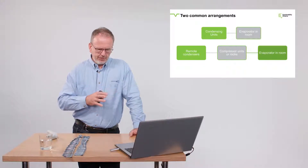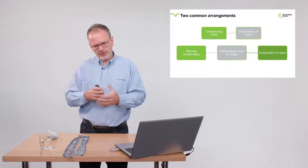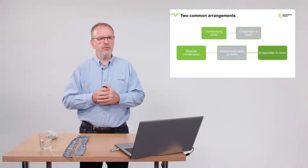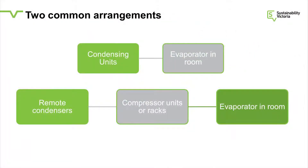Now, the compressors are one component — there are four components in the refrigeration system, but these are arranged into what we call units. One arrangement is where you have a condensing unit and an evaporator. The refrigeration technician buys one of each, puts the condensing unit outside and the evaporator in the room, connects the two, and it's done. Larger systems have remote condensers and compressor units without condensers built in, plus the evaporator. These are the most common arrangements, and 95% of the walk-in cool rooms discussed in this course will be covered by one of these two.